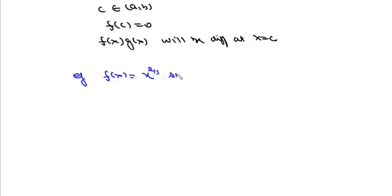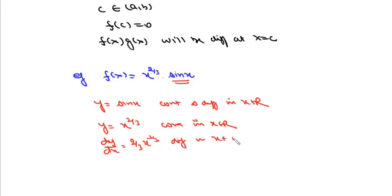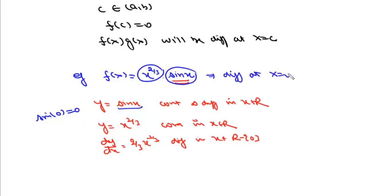For example, consider f(x) = x^(2/3) · sin(x). The function sin(x) is continuous and differentiable for all x ∈ ℝ, and sin(0) = 0. The function x^(2/3) is continuous for all x ∈ ℝ, and differentiable for x ∈ ℝ \ {0} with derivative (2/3)x^(-1/3). Since sin(x) is a differentiable function whose value is 0 at x = 0, and x^(2/3) is continuous, the product x^(2/3) · sin(x) is differentiable at x = 0.